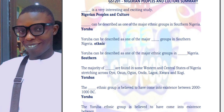Nigerian People and Culture is a very interesting and exciting study, and it's one of the courses that people pass with very little effort. The interesting thing about this course is that there are a lot of names — some of those names might sound funny to you because you're not coming from that region. Aside from names, we have a lot of dates and a lot of events, so if you are not a fan of history, you might at some point not enjoy the course.